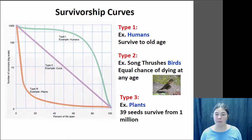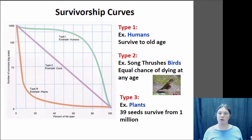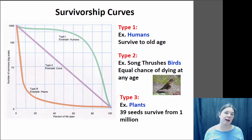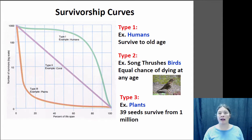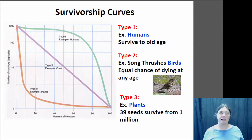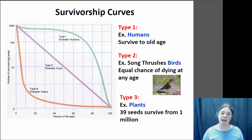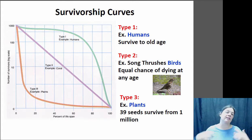Plants tend to have a Type 3 curve. For example, an oak tree produces several thousand acorns, but most are not going to survive — they get eaten by a squirrel, sprout in the wrong place, or get chomped by a deer when they're a small seedling. So most individuals die very young, and only a few survive. But once they reach a certain size, they're very likely to survive for a long period of time.